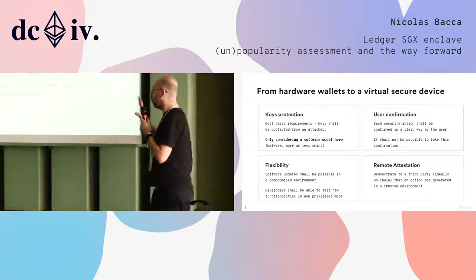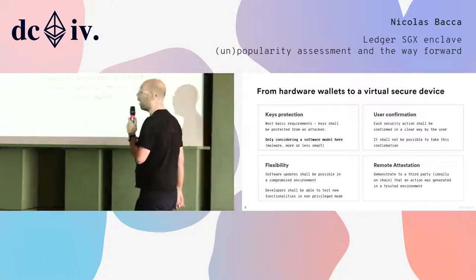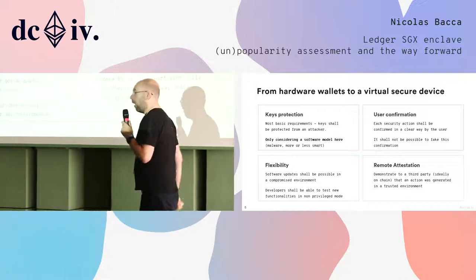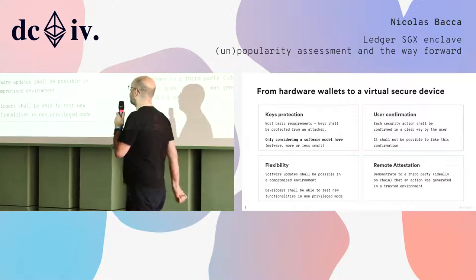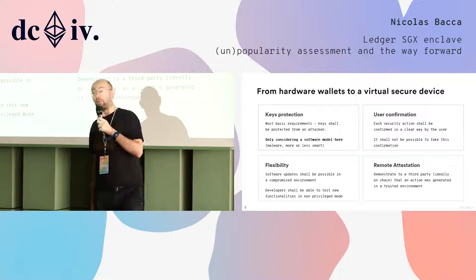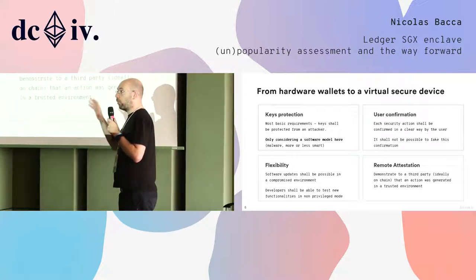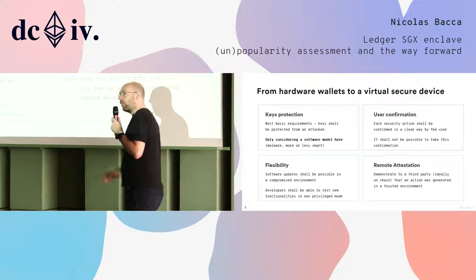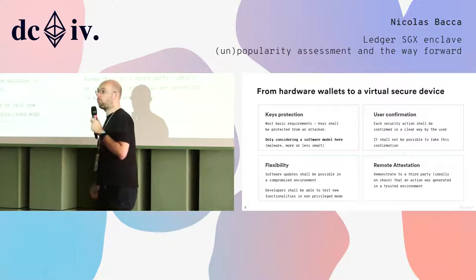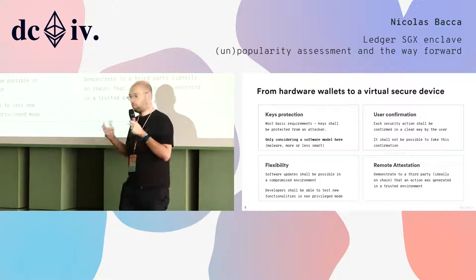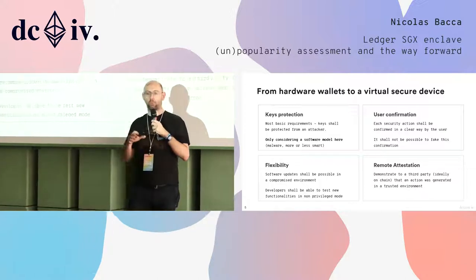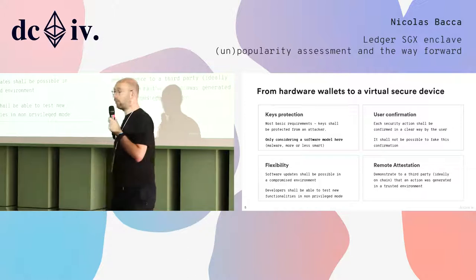If you want to transition from a hardware wallet to a virtual secure device or to an enclave, you have to consider a few things. First, you want to focus on key protection — it's the most important part of a hardware wallet and will be very important for an enclave as well. You don't want an attacker to be able to extract keys. For an enclave, we will focus on software threat models; we will not consider hardware threat models where an attacker has physical access to the enclave, as that's pretty much out of scope.